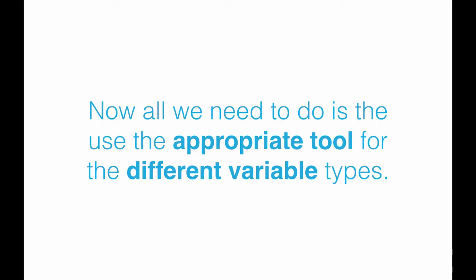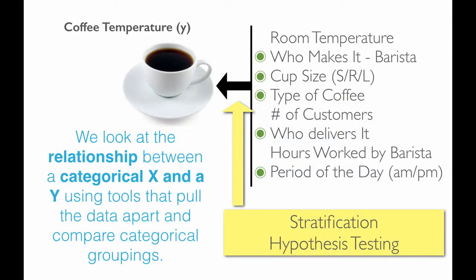All we need to do at this point is use the appropriate tool for the different variable types. The relationship between a categorical X and a Y is analyzed by using tools that pull the data apart and compare categorical groupings. The different tools that would do this would be stratification type tools or hypothesis tests — such as one-sample t-tests, two-sample t-tests, or analysis of variance. These types of statistical tools are hypothesis tests, and they all relate to analyzing the relationship between a categorical X and a Y.